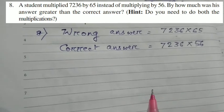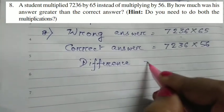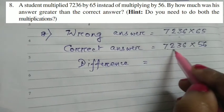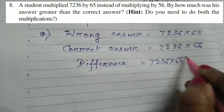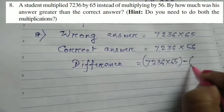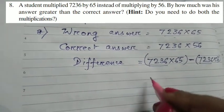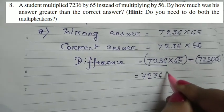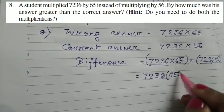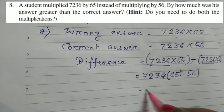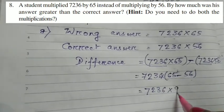I need to find the difference. If I want, I can multiply and find the difference. Otherwise, you see 7,236 is common here. What I will do? 7,236 into 65, minus 7,236 into 56. You see 7,236 is common here. I took 7,236 out and 65. This minus came here and 56 is here. This is 7,236 into, what is 65 minus 56? 9.